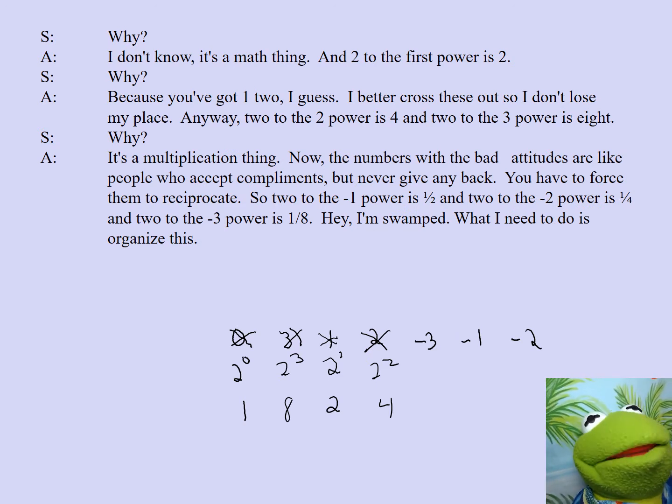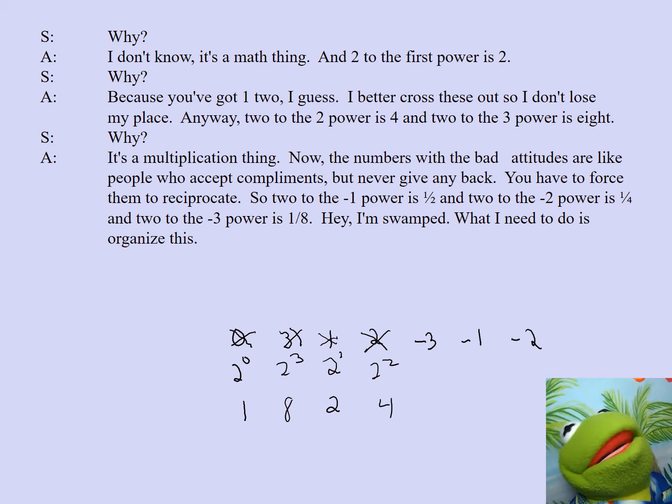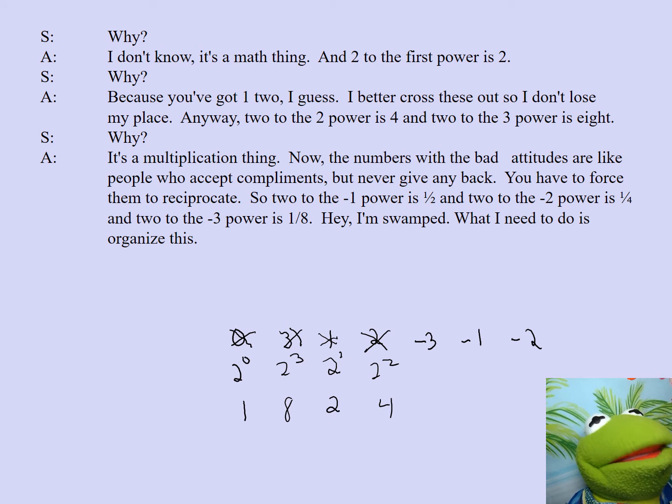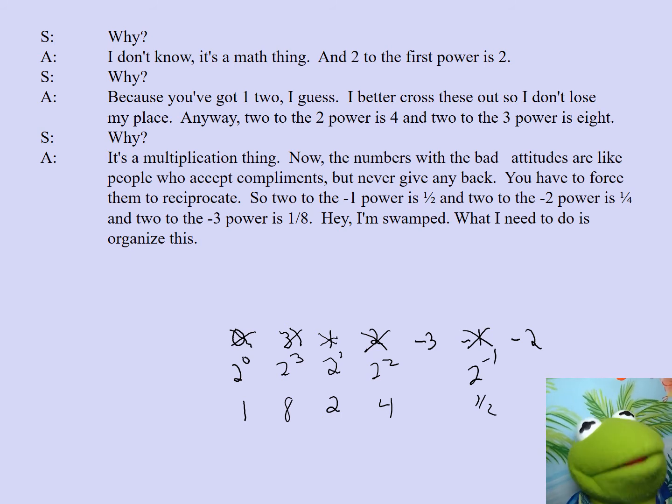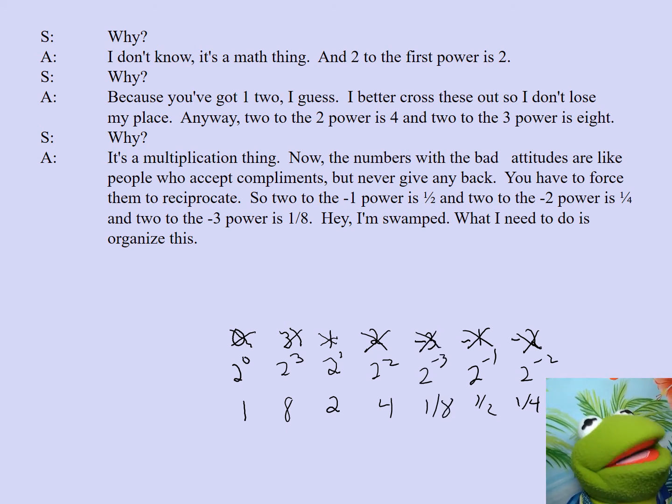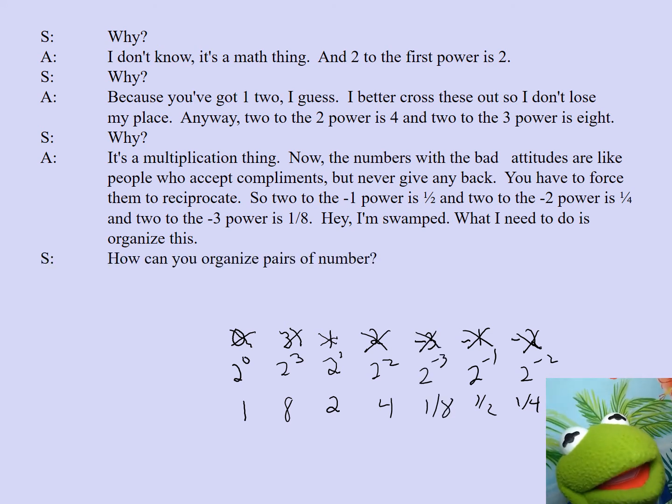Now, the numbers with the bad attitudes are like people who accept compliments but never give any back. You have to force them to reciprocate. So, two to the negative first power is one half. And two to the negative second power is one fourth. And two to the negative third power is one eighth. Hey, I'm swamped. What I need to do is organize this. How do you organize pairs of numbers?